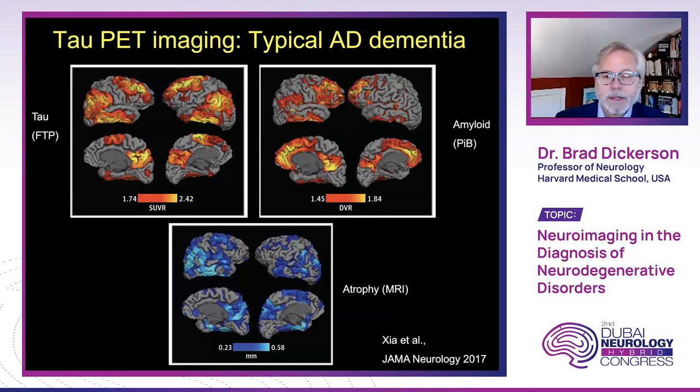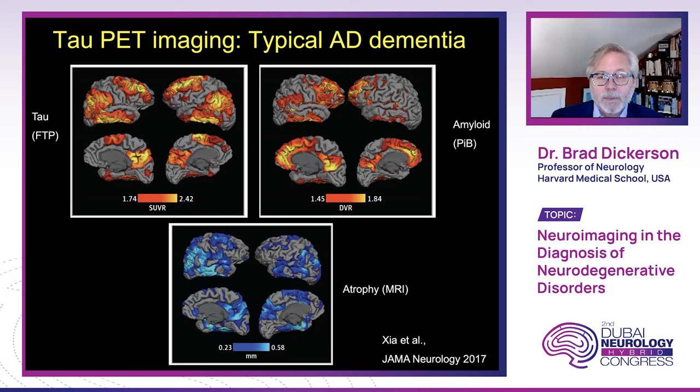The most recent imaging biomarker to come on the scene is tau PET imaging, which was approved by the FDA now almost two years ago, but is very hard to obtain because the distribution network and reimbursement are not yet in place. We have an incredible host of tools to measure the molecular biomarkers of Alzheimer's pathology in the brain, but we're not yet able to use these in routine clinical practice under most circumstances because of lack of reimbursement.